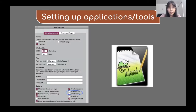The other option is to use converting applications to manually convert data. First, you need to open your application. If you are using a Mac, you should open a blank TextEdit document. When you open this application, go to Preferences and uncheck Smart Quotes and Smart Dashes, just like this screenshot. This step will make sure your text file uses standard ASCII characters.